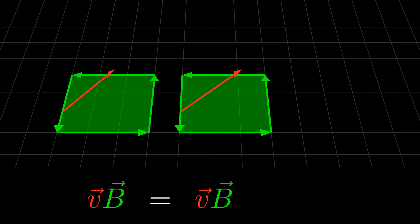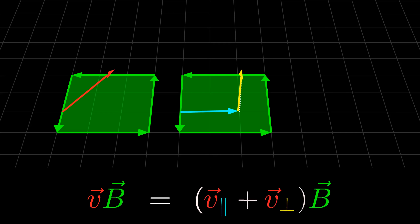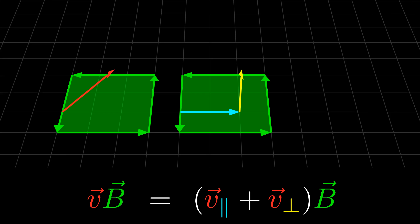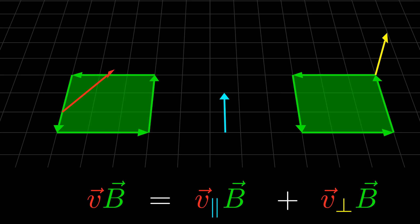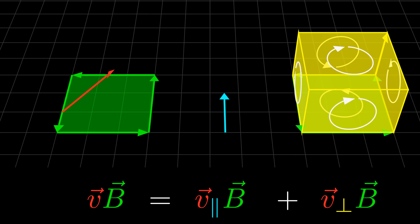Let's say we wanted to multiply this vector with this bivector — all we have to do is join them together into this trivector. Just like how describing the product of parallel and perpendicular vectors allowed us to calculate the product of arbitrary vectors, we can now find the product of any vector with any bivector. To find the product of an arbitrary vector with a bivector, we split v into a part parallel to b and a part perpendicular to b, then distribute. The first term rotates the vector by a right angle, and the second term is this trivector. Again, we call these two parts the inner and outer products.